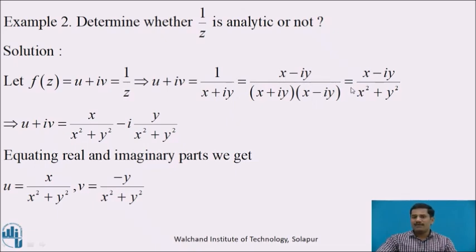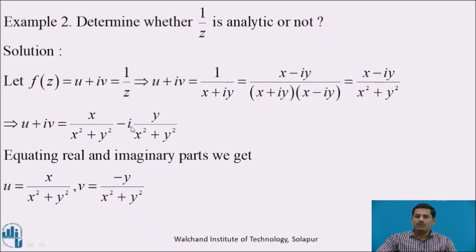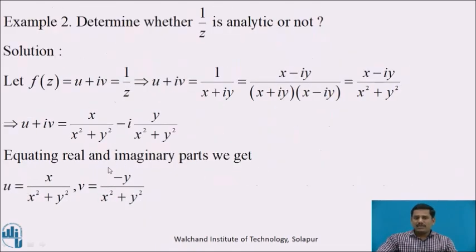The conjugate of the denominator x + iy is x − iy. Multiplying numerator and denominator by x − iy, we get (x − iy) / (x² + y²), since the product of a complex number and its conjugate equals the sum of squares of real and imaginary parts. Separating the expression, u + iv = x/(x² + y²) − i · y/(x² + y²). Equating parts: u = x/(x² + y²) and v = −y/(x² + y²).